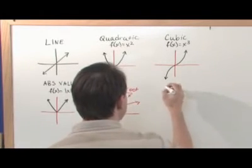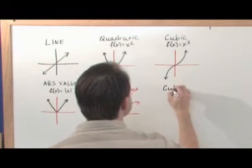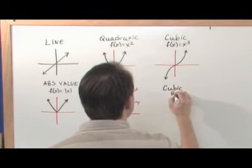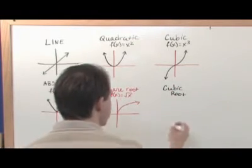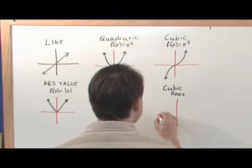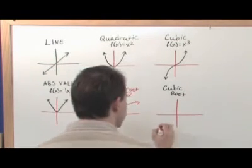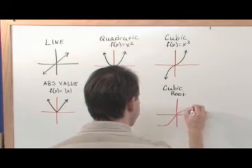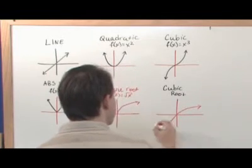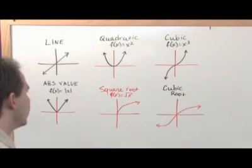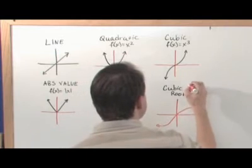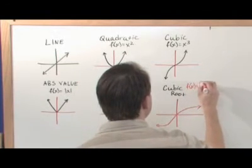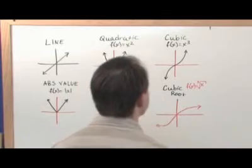And the final one I want to talk to you about is a cubic root. A cubic root and that one is going to look like this. It's going to kind of look like a snakey s like this. So, and that would by the way be something like f(x) equals the cube root of x. The cube root of x.